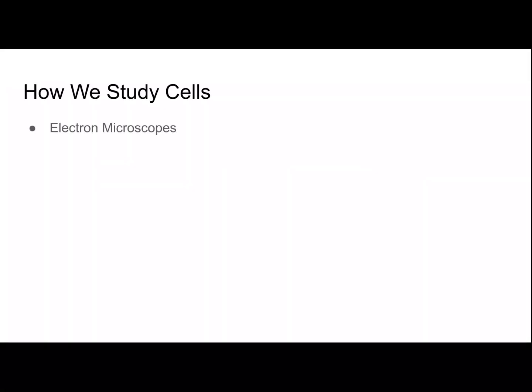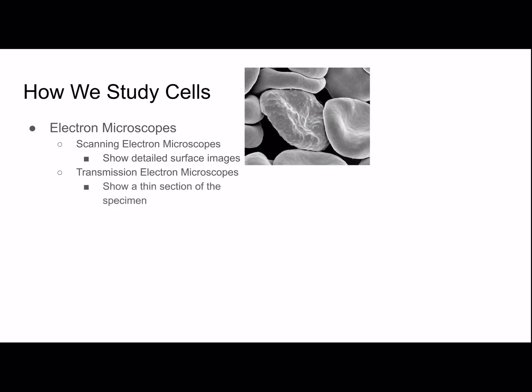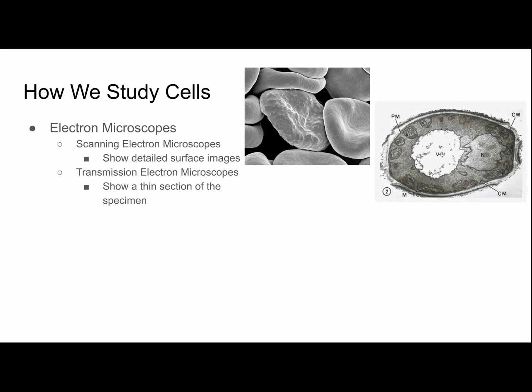Electron microscopes — specifically scanning electron microscopes, which show detailed surface images, and transmission electron microscopes, which show a thin section of the specimen. Here is an image from a scanning electron microscope; you can see the surface of the red blood cells very well. And here is an image from a transmission electron microscope, and you can see it's like a cross-section of the cell.